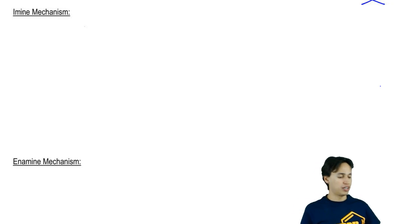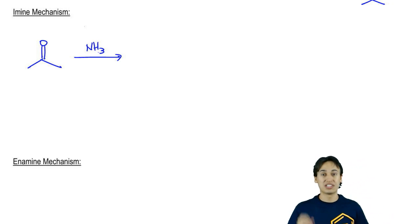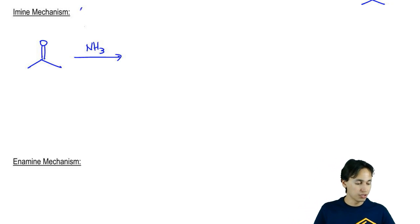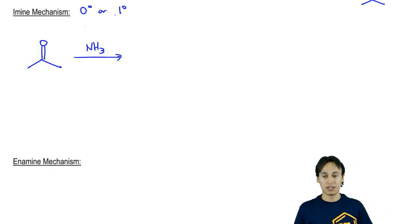An imine is created when a carbonyl reacts with a primary amine and acid. You can also use ammonia, which would be considered a zero degree amine. It's the same thing. Either zero degree or primary would both make an imine.